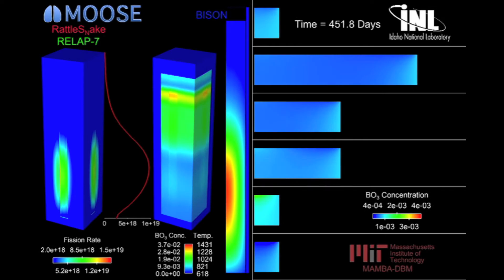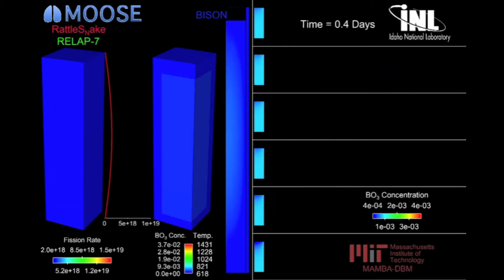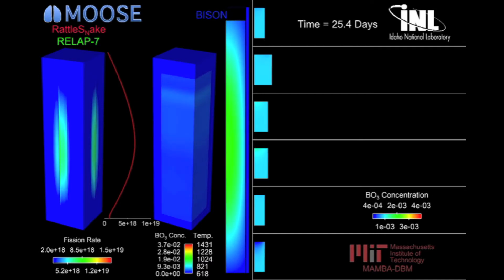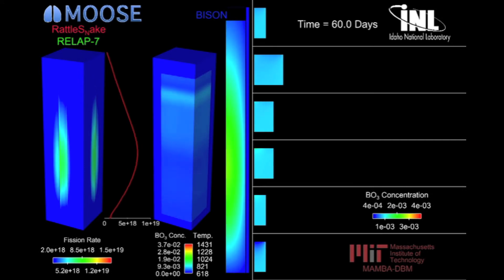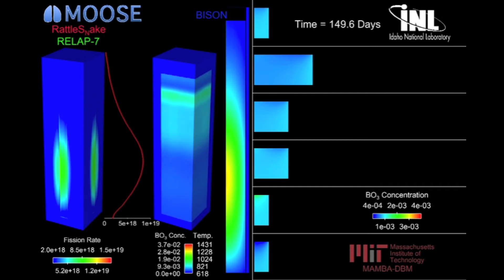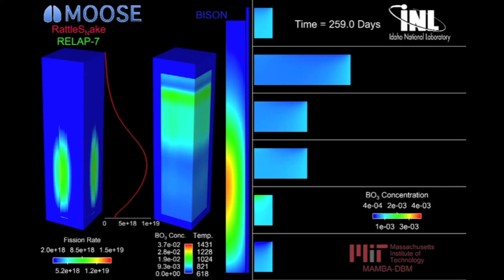On the left side we're looking at the fission rate, which is the actual power inside of the reactor. There's a red line plot showing the shape of that power as it goes from top to bottom within the reactor. The middle view is showing the buildup of these boron deposits on the outside of the fuel — specifically for one particular pin within the reactor, pictured there in the middle.